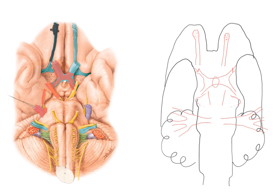The sixth cranial nerve, the abducens, emerges on the ventral aspect of the brain stem right at the junction between the medulla and the pons. Here is the sixth cranial nerve emerging from that junction. It's quite interesting in that it has an extremely long intracranial course, which puts it at risk of damage by compression from tumours — because of that long intracranial course it's more likely to be compressed.